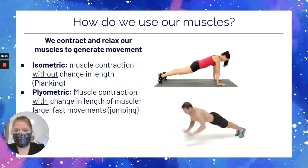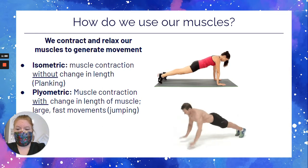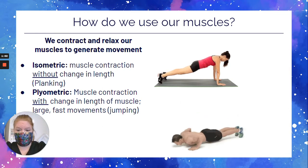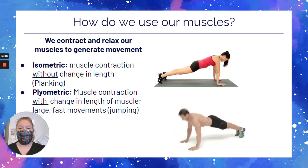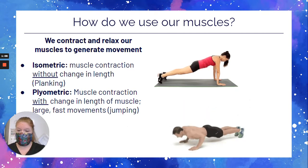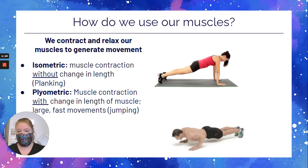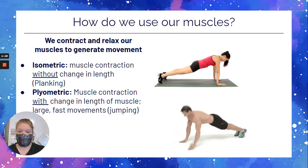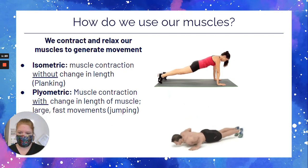For example, like a plank. Your muscles are contracting, but there is no changing in length — they're not actually moving. Plyometric is when you have muscle contraction with a lot of change in length of the muscle. In this case, you're going to need to be doing large, fast movements. You've got to be like jumping, running — jump rope is a great example.